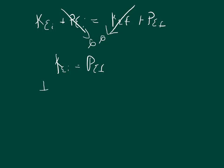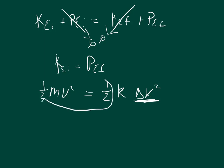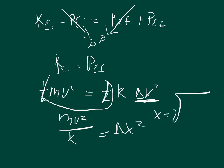Kinetic energy is one half mass times velocity squared, and that equals one half K times delta-x squared, where K is the spring constant. We want to solve for delta-x. Multiply both sides by two to cancel the one-half, then divide both sides by K. So M times V squared divided by K equals delta-x squared. Taking the square root of both sides gives us: x equals the square root of mass times velocity squared over K.